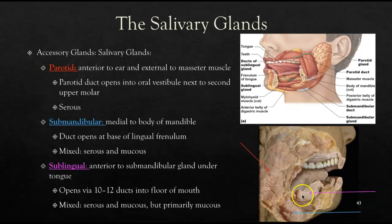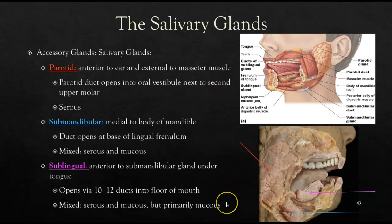The sublingual gland is anterior to the submandibular gland, under the tongue. It has many ducts — about 10 to 12 — that open up into the floor of the mouth, which is why you might feel saliva pool under your tongue when you think of something sour. Its fluid is a mix of serous and mucus, although primarily mucus. Among these three salivary glands there is a wide range in the type of fluid each secretes.